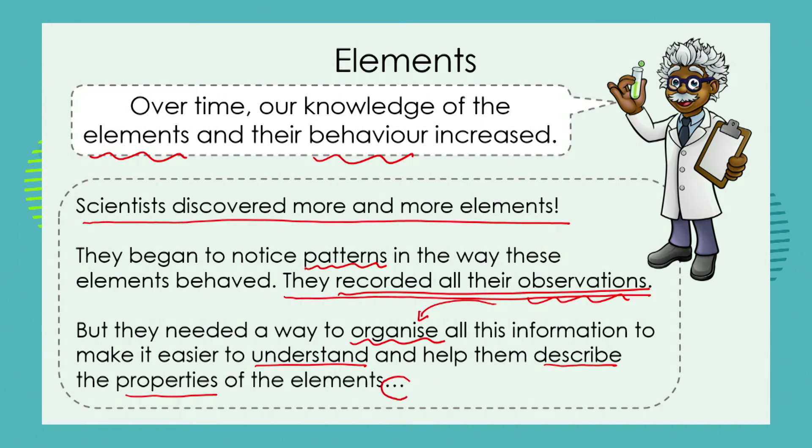In our next lesson, we're going to look at how scientists have organized and classified elements in such a way that elements that behave in similar ways are grouped together, and elements that behave in completely different ways are not grouped in the same groups. So we're going to look at how scientists have grouped and studied elements. But for today, I think you do understand what an element is.